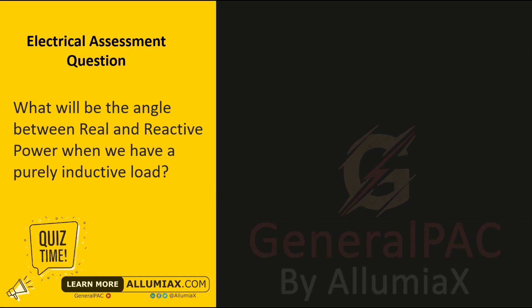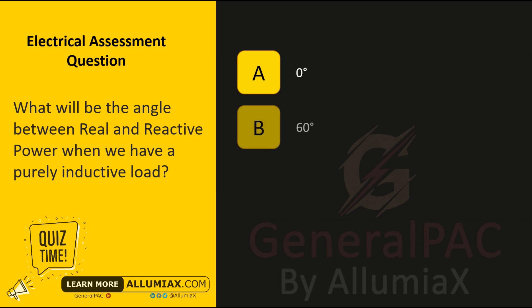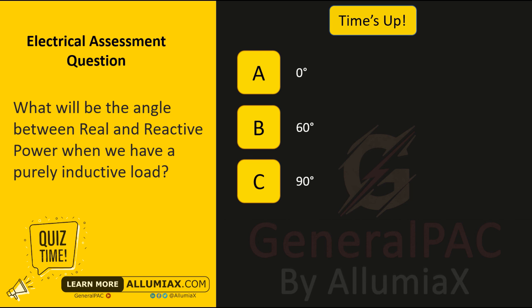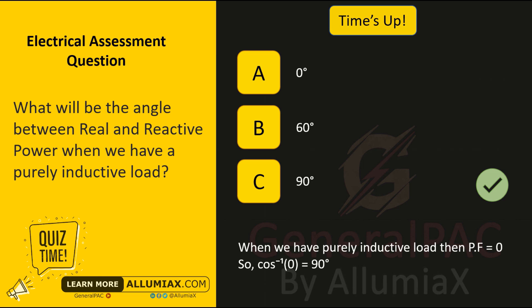What will be the angle between real and reactive power when we have a purely inductive load? A: Zero degrees, B: Sixty degrees, C: Ninety degrees. Time's up. The answer is C: Ninety degrees. When we have a purely inductive load, the power factor is equal to zero, so cosine inverse of zero equals 90 degrees.